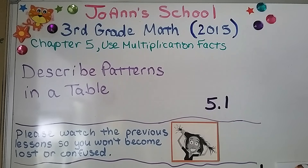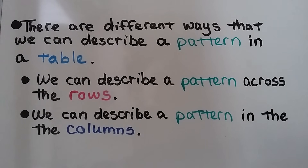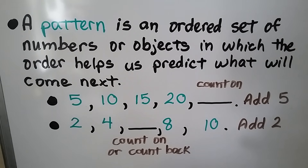We're in a new chapter, chapter 5. We're going to talk about how to use multiplication facts. This is 5.1, and we're going to describe patterns in a table. There are different ways that we can describe a pattern in a table — we can describe a pattern across the rows or in the columns. A pattern is an ordered set of numbers or objects in which the order helps us predict what will come next.